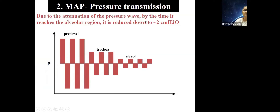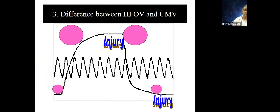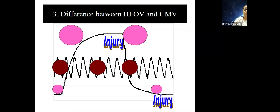Due to attenuation of the pressure wave, by the time it reaches the alveolar region it is cut down to around 2 cmH2O. So even if you're giving a MAP of 20–25, the alveoli see much less than that as the pressure travels through the airways. In HFO you do not get the sudden expansion and return to PEEP level — there is no ergotrauma from shear and stress effects of PIP and PEEP. Mean airway pressure is continuously maintained, so the alveoli are almost the same size throughout the respiratory cycle.